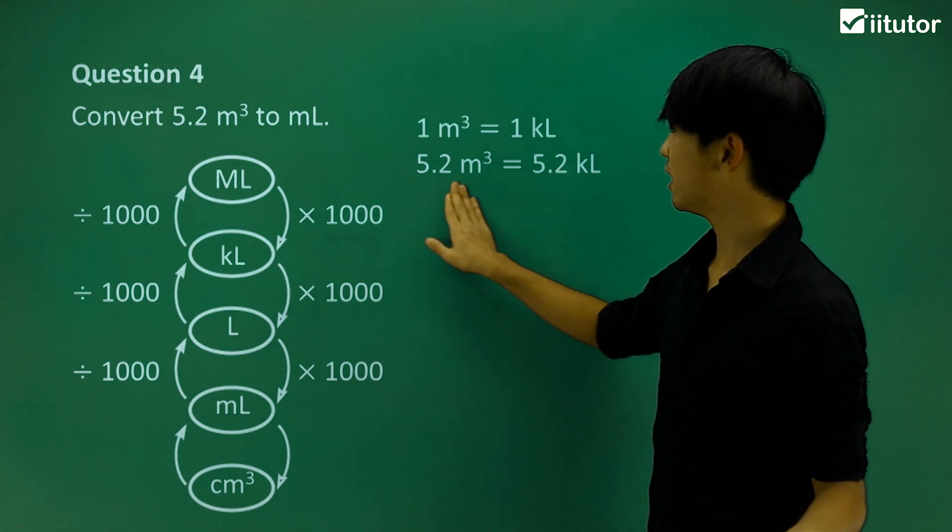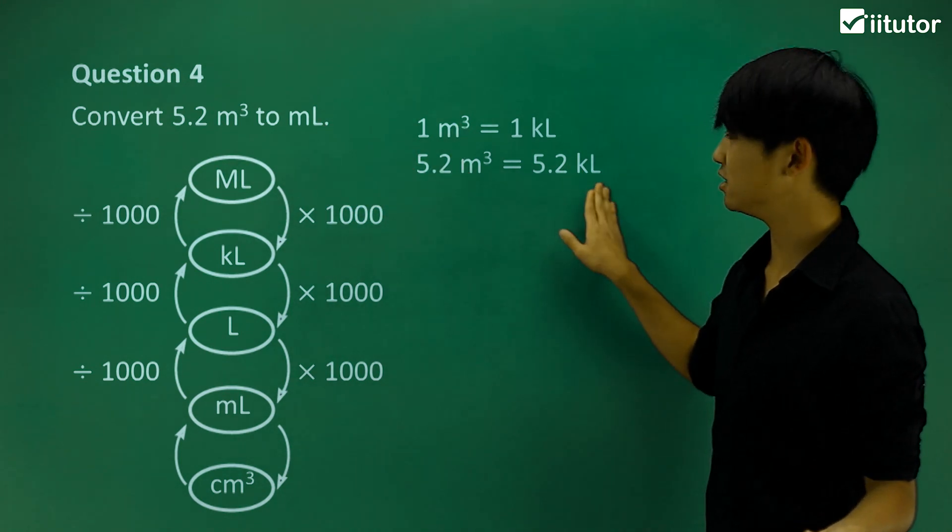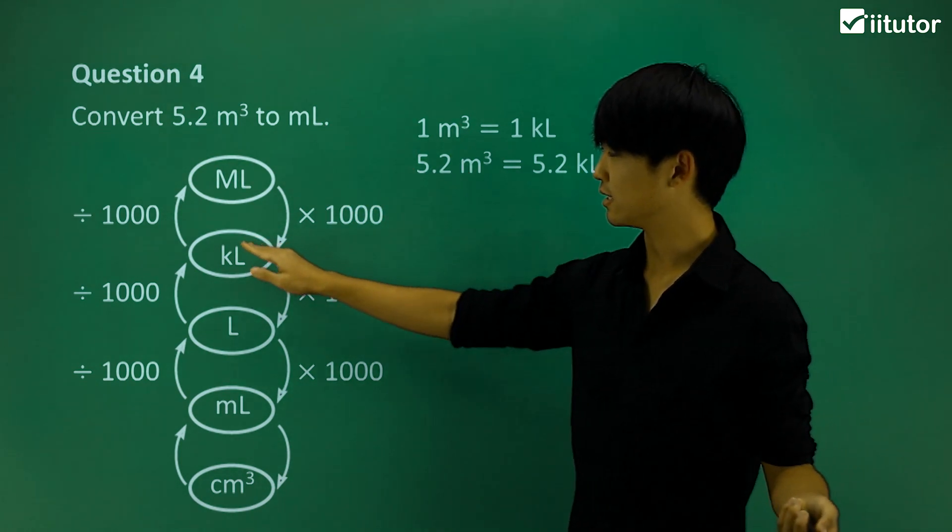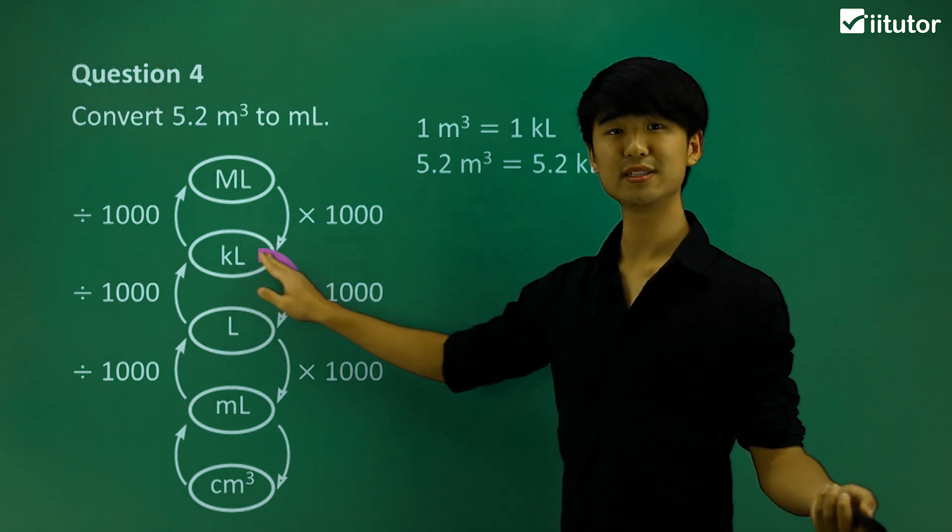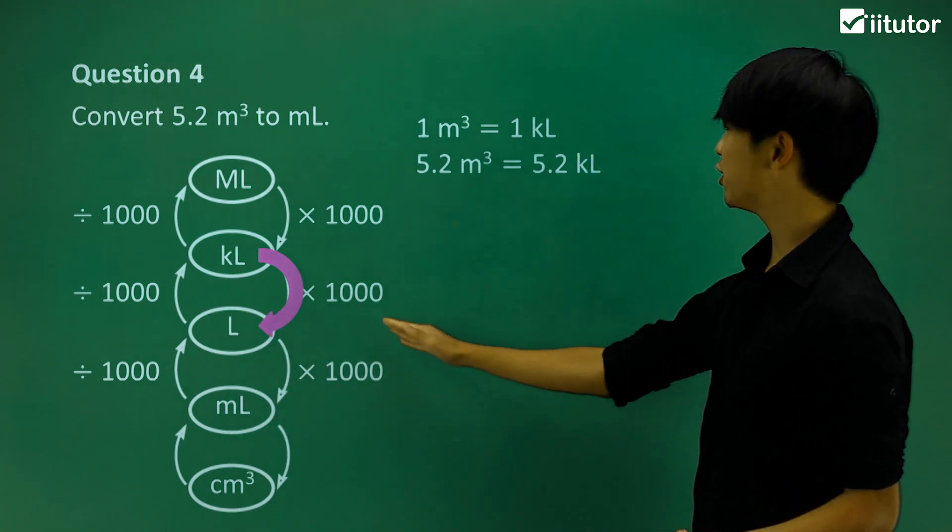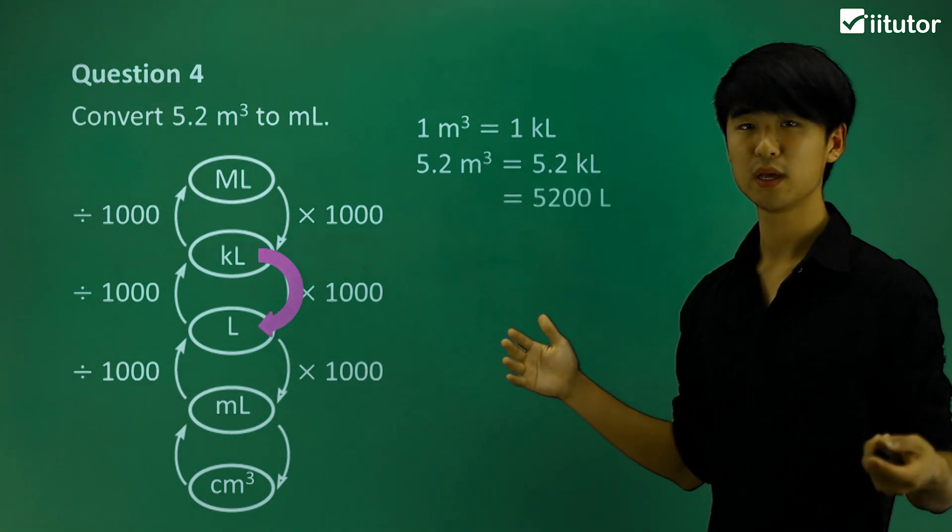Now, so I've got this part. I want it in milliliters, but I have it in kiloliters right now. So what I'm going to do is I'm going to go from kiloliters down to liters. To do so, multiply by 1,000.